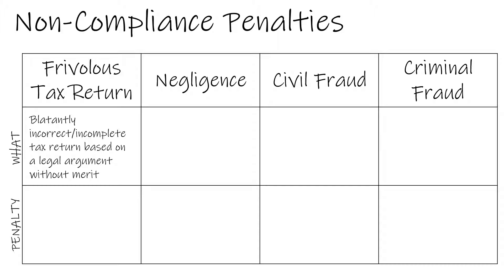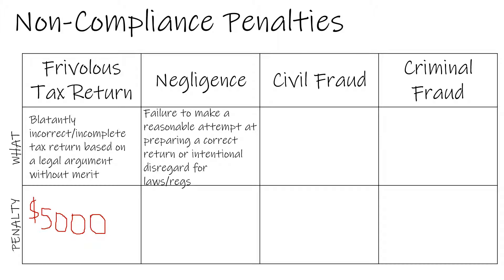The textbook gives an example of a taxpayer who filed his return by mail and cited a spurious argument in defense of why he should not pay taxes. Not only did the IRS impose taxes on the gentleman, they also imposed a $5,000 penalty on him for wasting their time and wasting government resources. Negligence is a failure to make a reasonable attempt at preparing a correct return or an intentional disregard for federal tax laws and regulation. The penalty for negligence is 20% of the tax liability that would additionally be due.